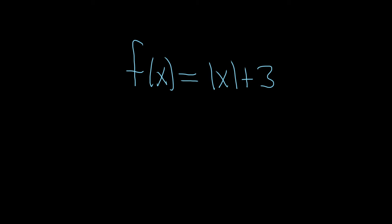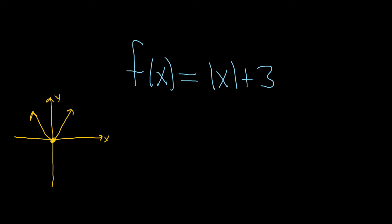The key is to know what the absolute value function looks like. The absolute value of x looks like a V. We're just going to give a rough sketch here, so I'm just going to draw a little V, just like that. So there's the absolute value of x — it looks like a V. I'll call it y equals the absolute value of x.